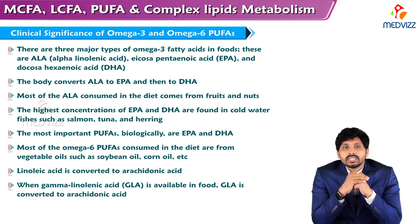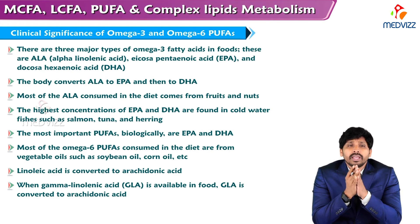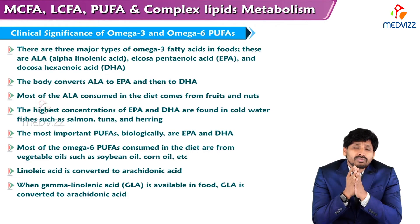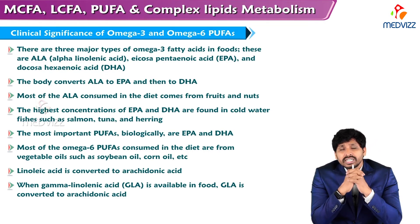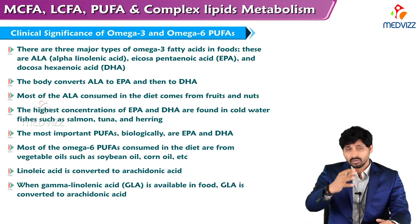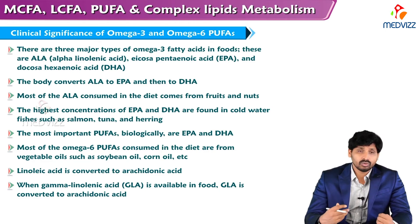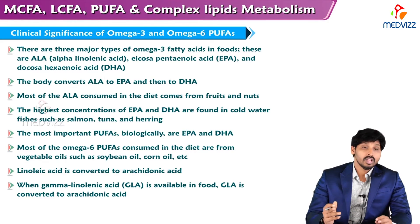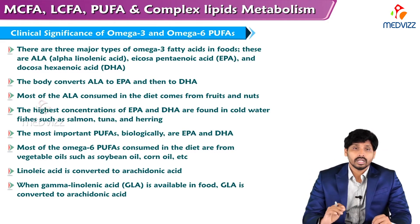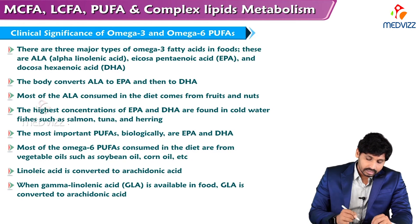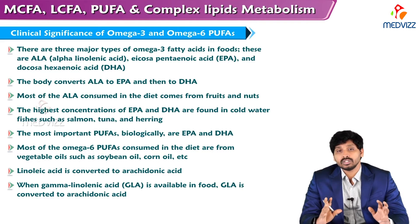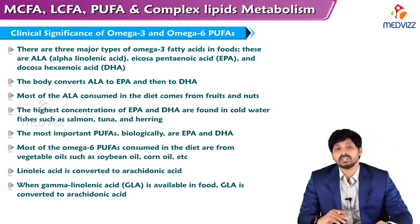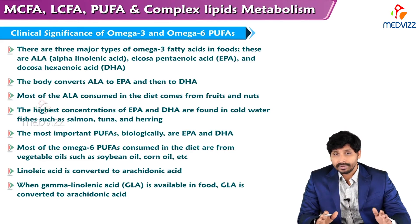There are three major types of omega-3 fatty acids in food: alpha-linolenic acid (ALA), eicosapentaenoic acid (EPA), and docosahexaenoic acid (DHA). DHA is very important for making of the brain, neurons, and myelin sheaths, and is connected with the central nervous system and retinal pigmentation. The body converts ALA to EPA and then to DHA. Most ALA consumed in the diet comes from fruits and nuts. The highest concentrations of EPA and DHA are found in cold water fish such as salmon, tuna, and herring. Most omega-6 polyunsaturated fatty acids in the diet come from vegetable oils such as soybean oil and corn oil.